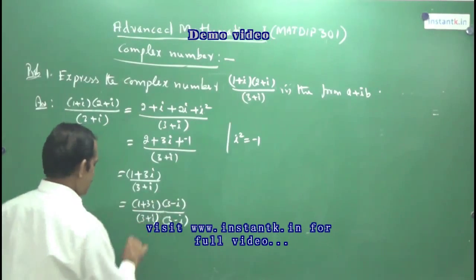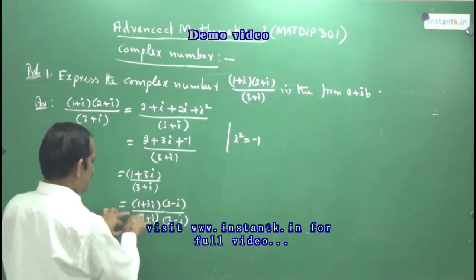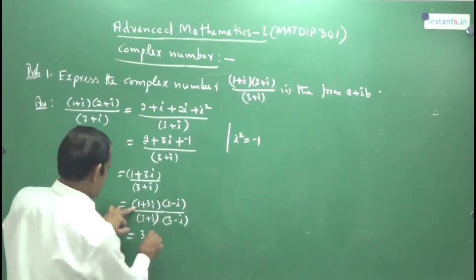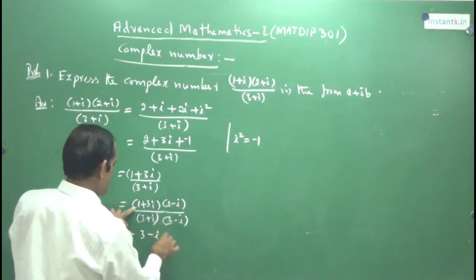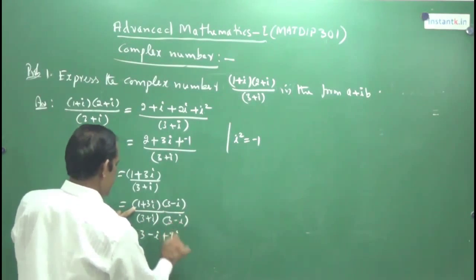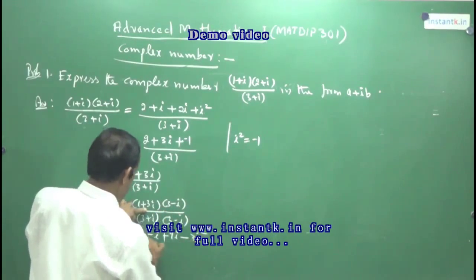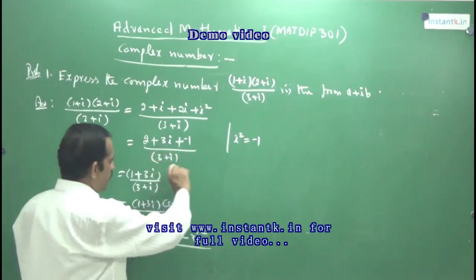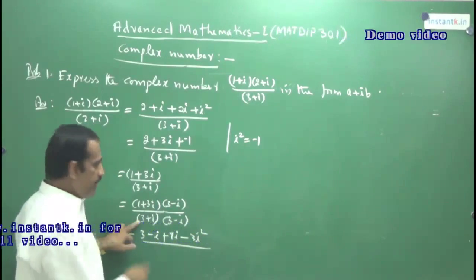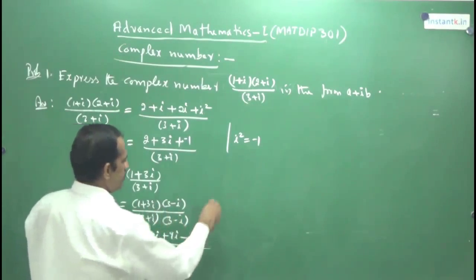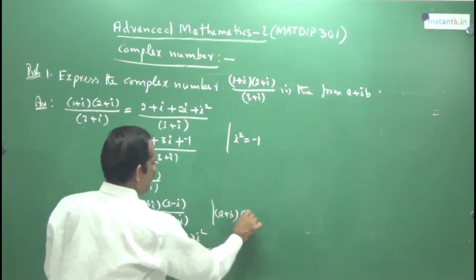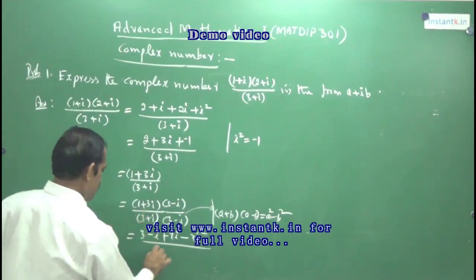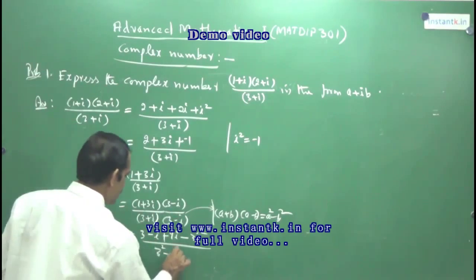Now expand the numerator again: 1 into 3 is 3, plus 1 into (−i) is −i. Then 3i into 3 is 9i, then −3i into i gives −3i². For the denominator: (3 + i) into (3 − i) is always in the form (a + b)(a − b), which equals a² − b². Here a = 3, so we get 3² − i² which is 9 − i².